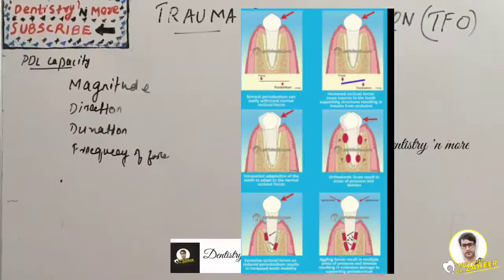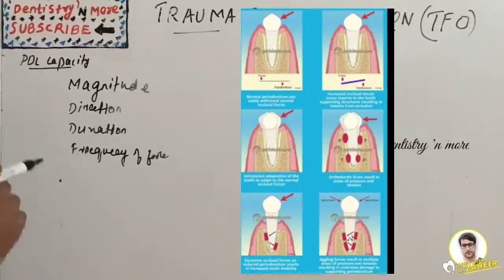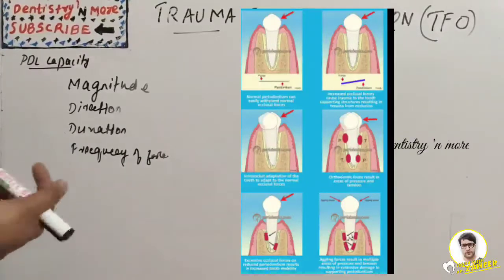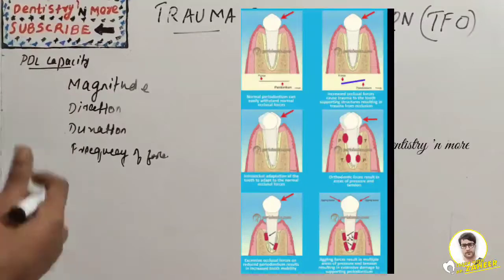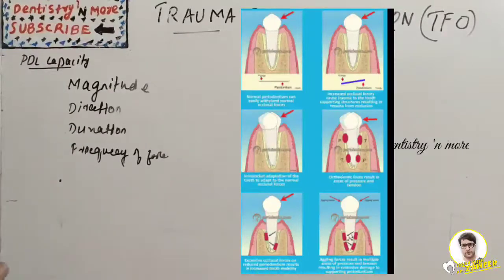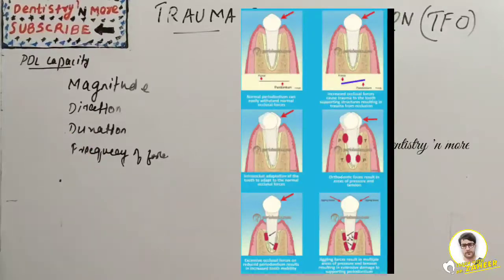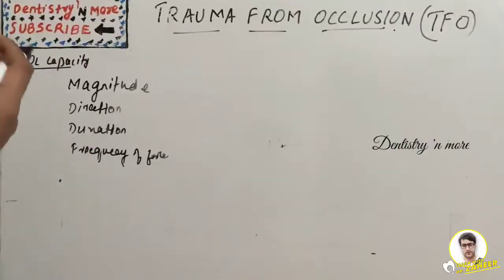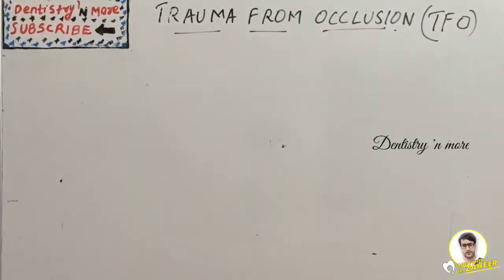Compared to vertical forces, lateral forces and torque are more likely to injure the periodontium. Regarding duration and frequency, constant pressure on the bone is more injurious than intermittent forces, but the more frequent the application of intermittent force, the more injurious it is to the periodontium.